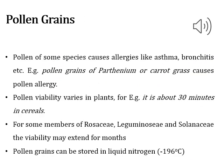Some pollen grains can lead to diseases like asthma and bronchitis. For example, Parthenium, also called congress plant or carrot grass, releases pollen that causes allergies.